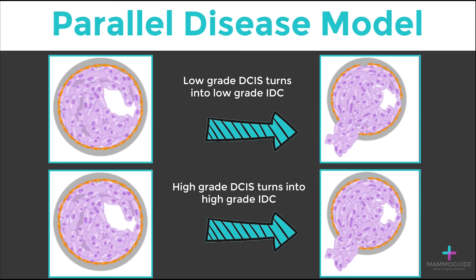Recent advances in genomics and molecular analysis have led to the parallel disease model. This says that low-grade ductal carcinoma in situ turns into low-grade invasive ductal carcinoma, whereas high-grade ductal carcinoma in situ turns into high-grade invasive ductal carcinoma. Low-grade and high-grade breast cancer are almost like two separate entities.